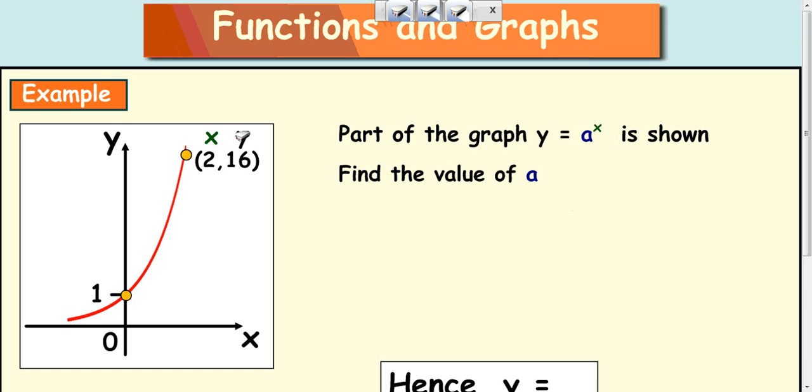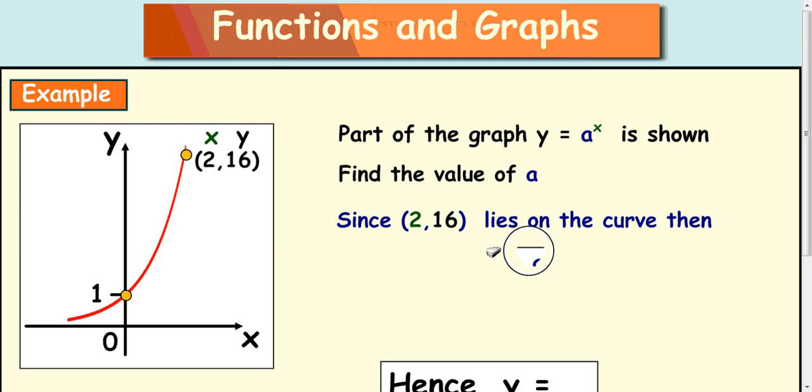So this is an x coordinate and this is a y coordinate. If we substitute these values in up here, then we've got a 16 here and a 2 up here. So 16 equals a squared, 16 here, 2 there. Then we can work out what a is.